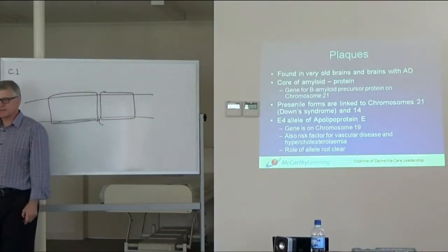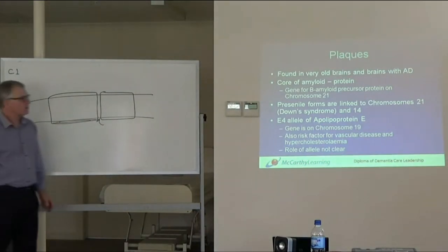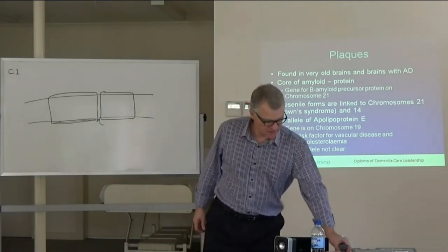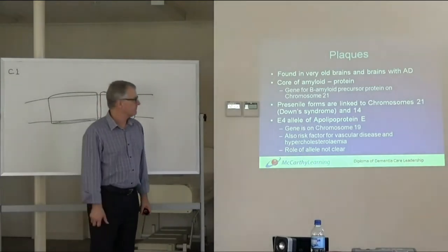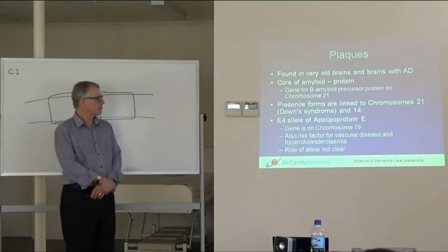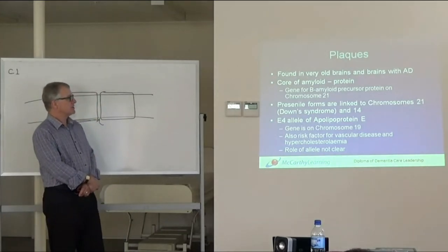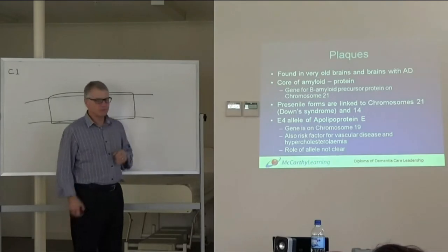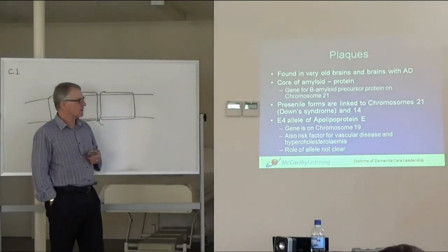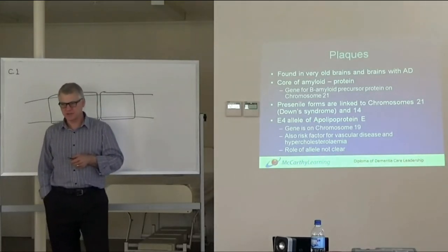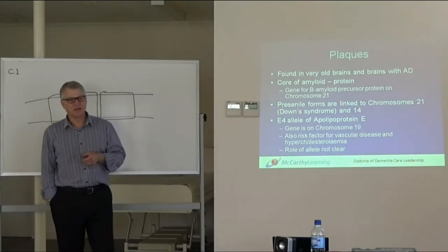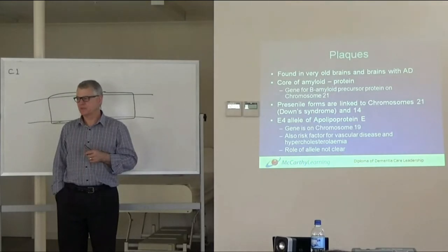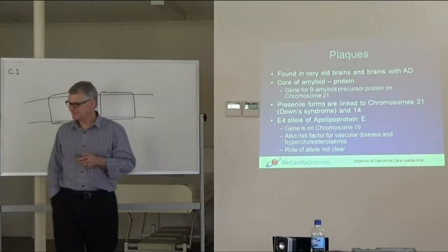The plaques. Let's go into this in more detail. The plaques are found in very old brains and brains with Alzheimer's disease. There tends to be a tendency as we age to develop more of these plaques, which suggests a normal aging process goes on as well as a disease process. The core of this amyloid plaque is a protein - beta amyloid precursor protein. We find a lot of it on chromosome 21.